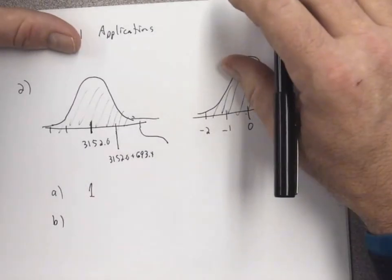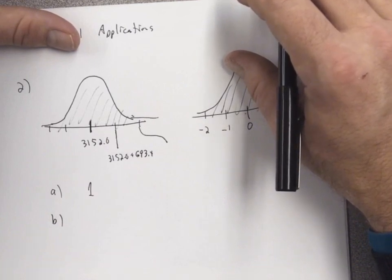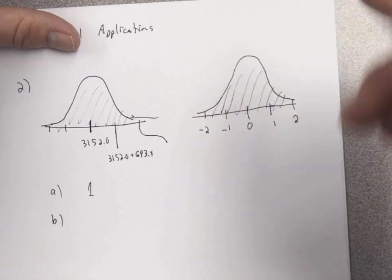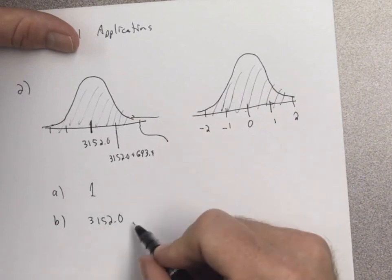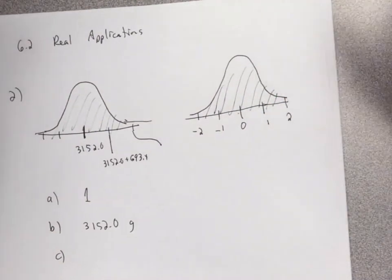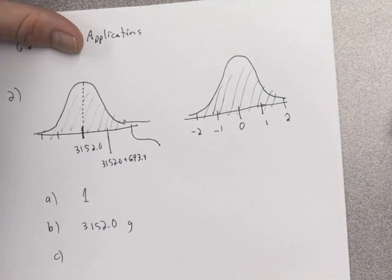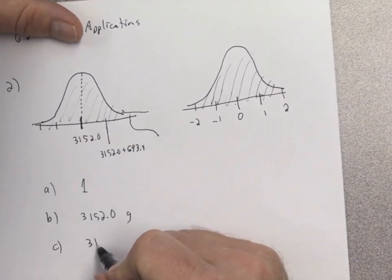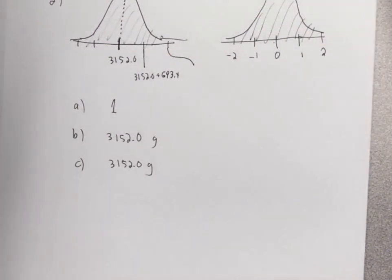Part B asks: what is the median? They only told us the mean, but since this is a bell-shaped symmetric curve, the median equals the mean — so it's 3152.0 grams. The mode is the value that occurs most, and on a normal distribution the mode also equals the mean: 3152.0 grams. On a normal distribution, the mean, median, and mode are all the same number — that's what makes it such a nice curve to work with.